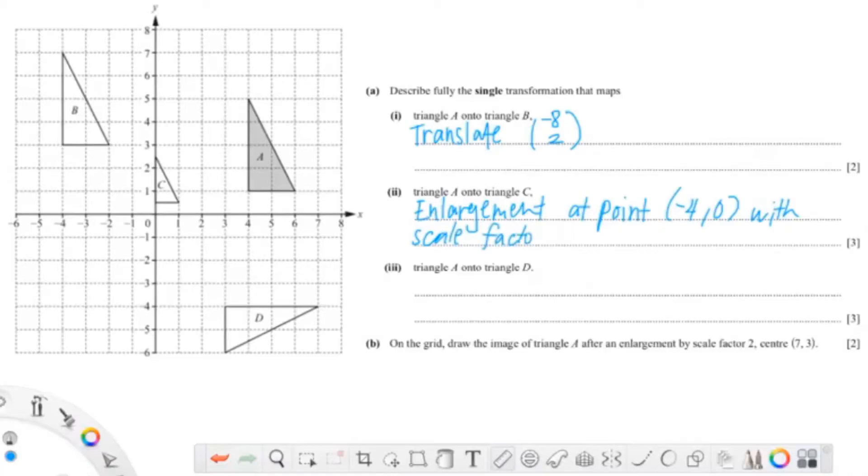To find the scale factor, what I did was I divided the image by the object—so C over A. You can see C is 1 over 2—1 there, 2 there—so 1 over 2. You can even do this with the other side, with the other length. You can see that this is 4 units and this is 2 units, and 2 over 4 simplifies to 1 over 2. So our scale factor is 1 over 2.